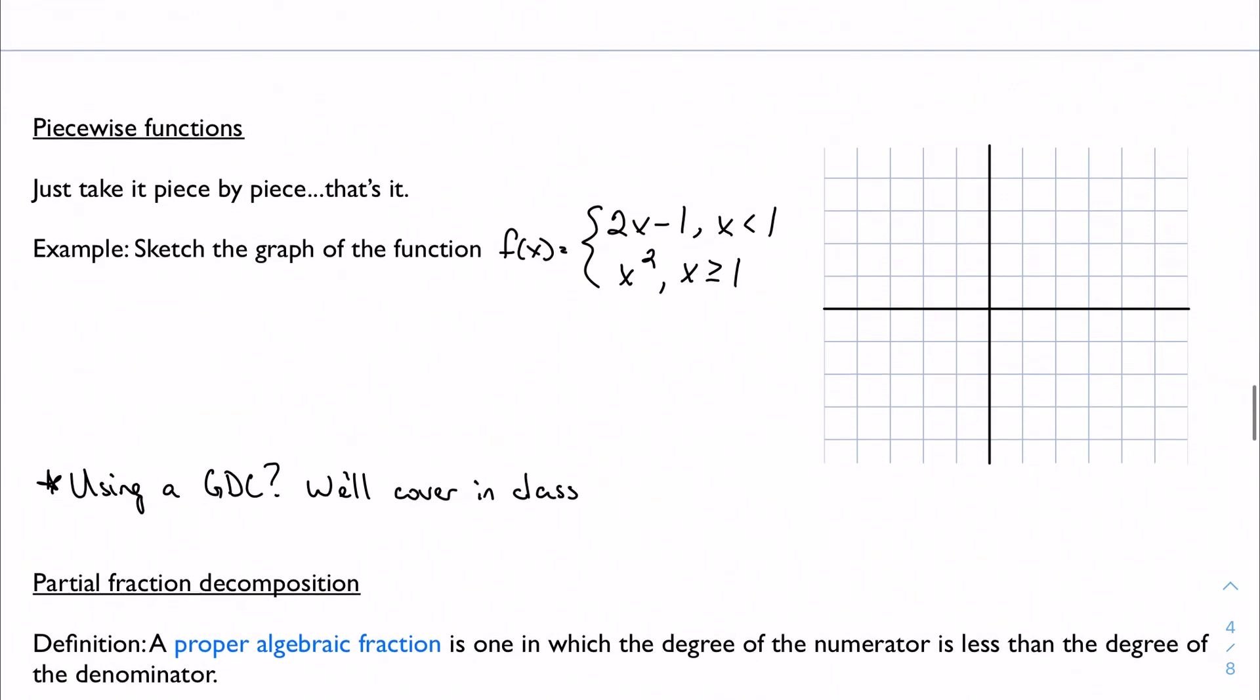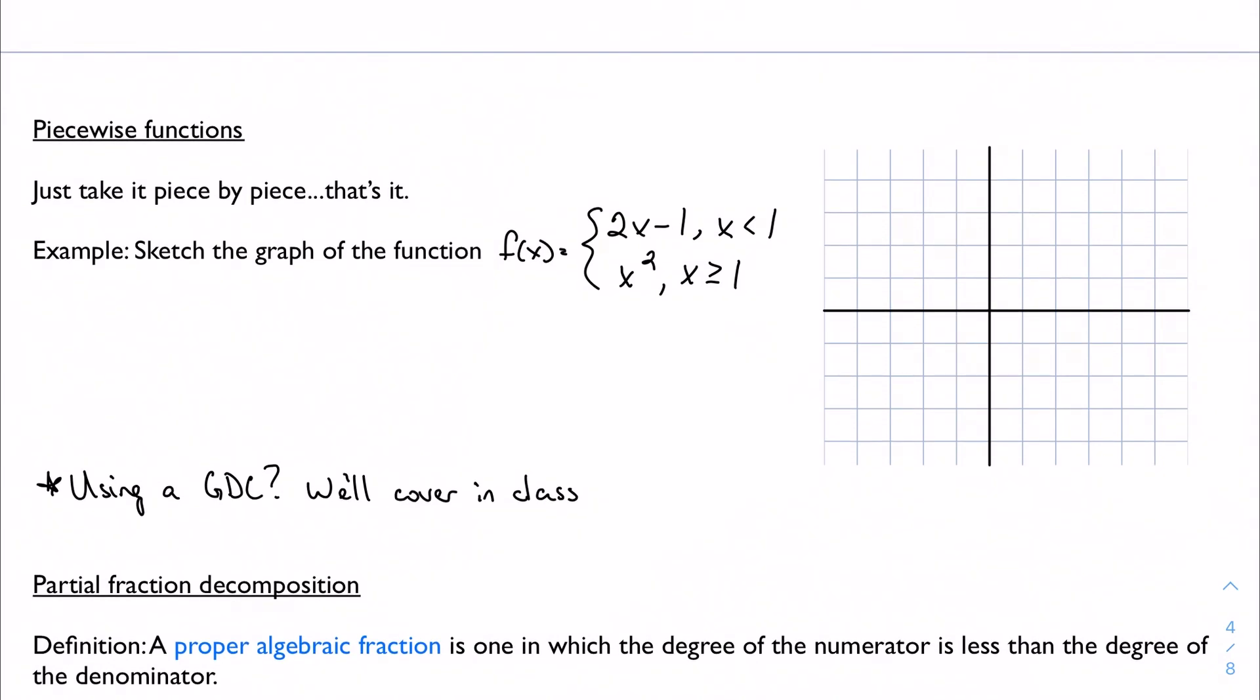We're gonna move on to piecewise functions, which IB spends even less time on, because it's really simple. All you gotta do is take it piece by piece. You don't have to do anything fancy at all. These are maybe a little overwhelming looking, because there are two parts to them, but they're really straightforward to graph. If I notice here, I've got two pieces to my function, two conditions.